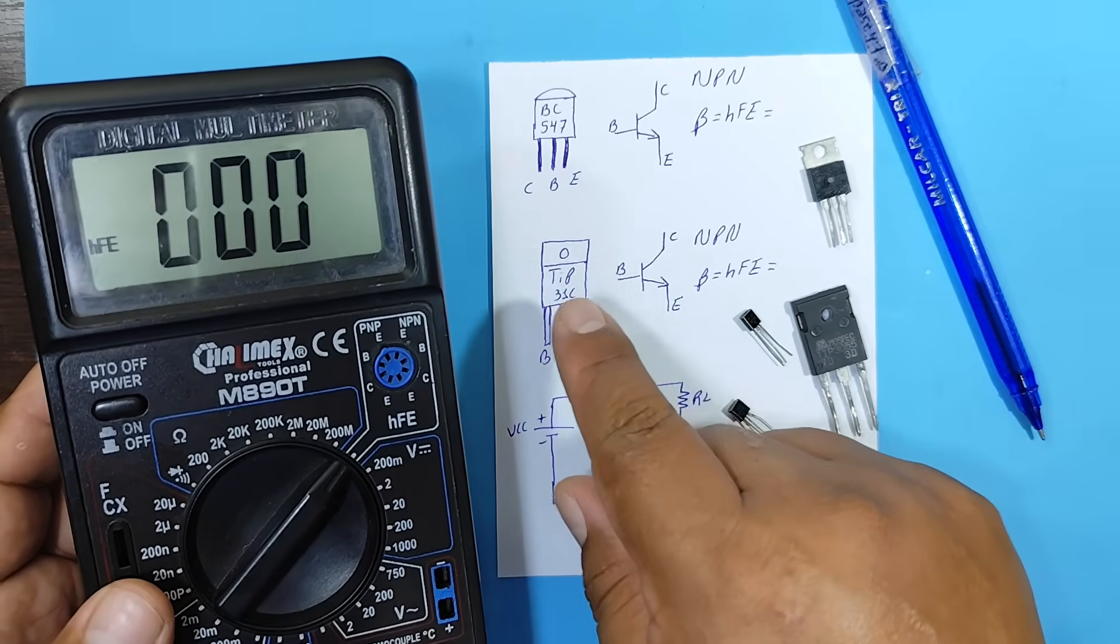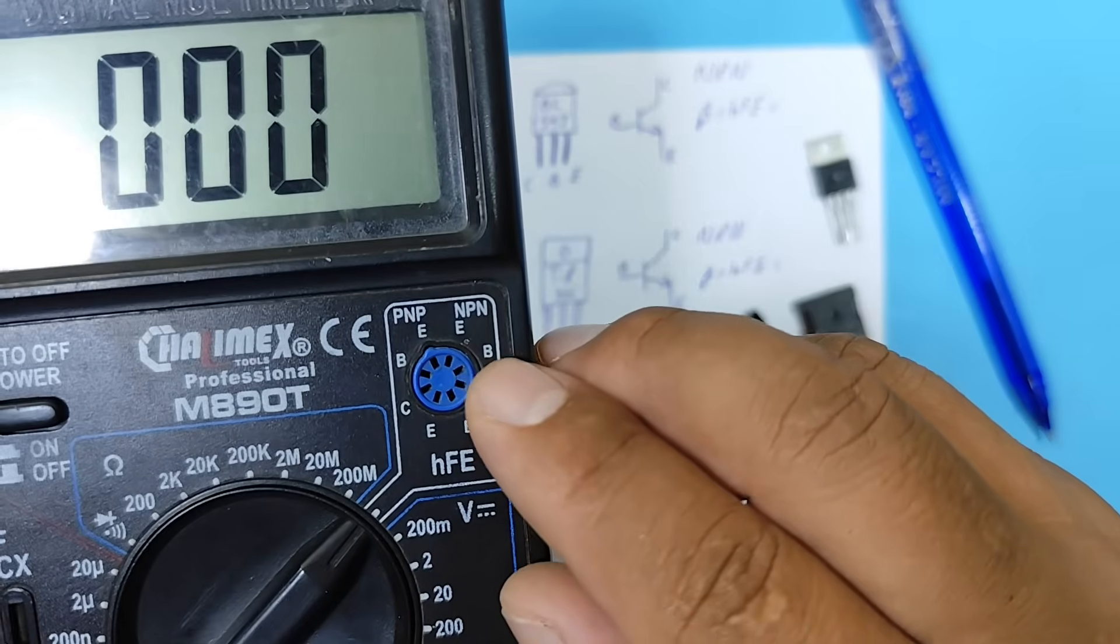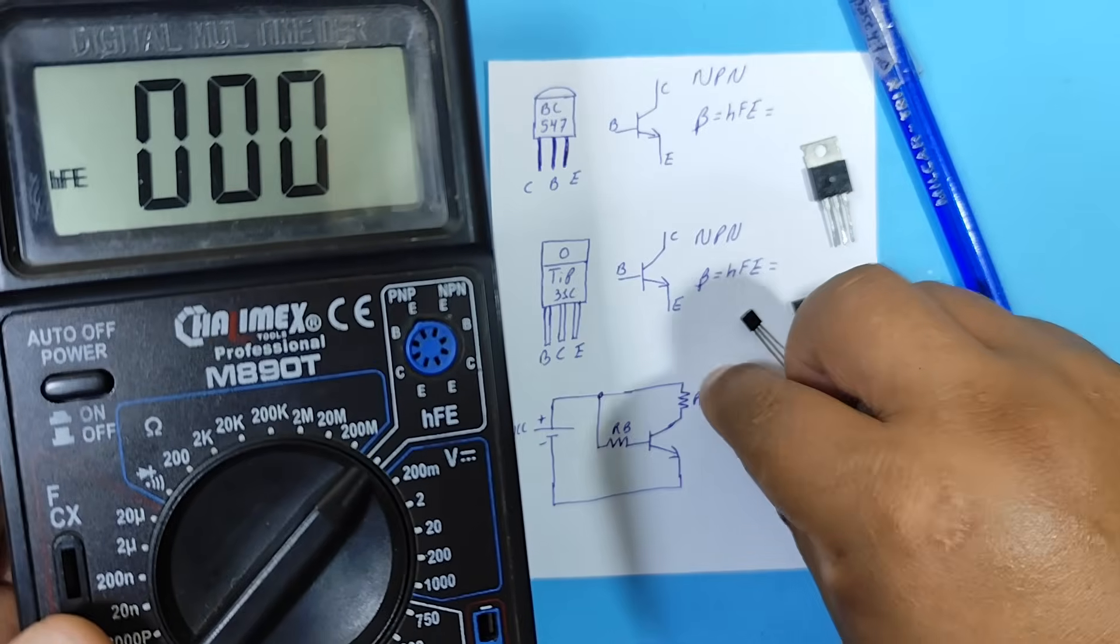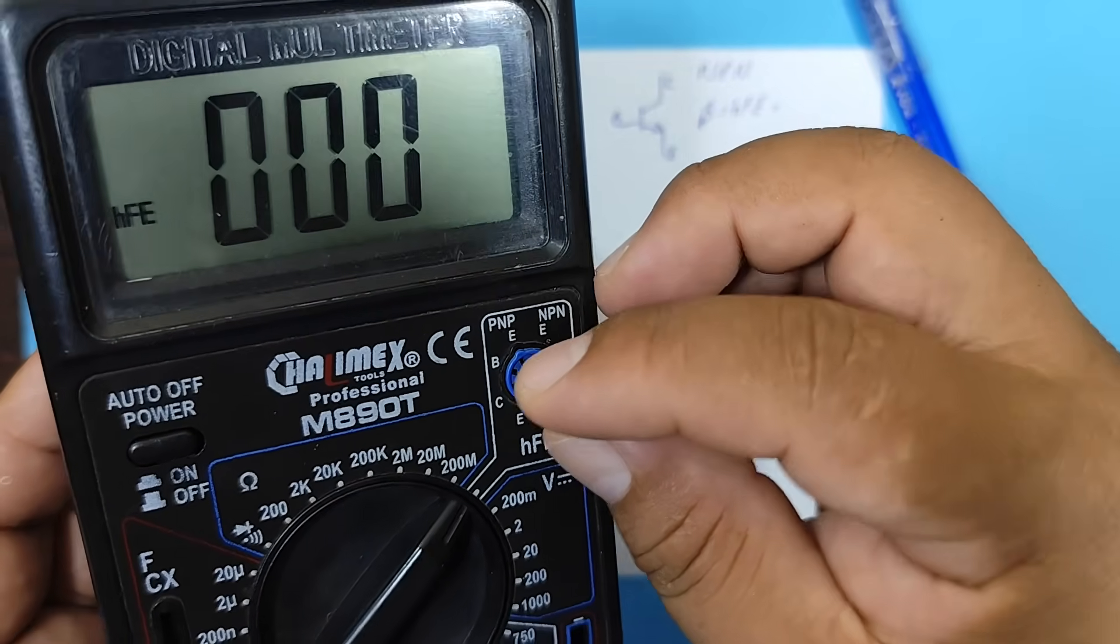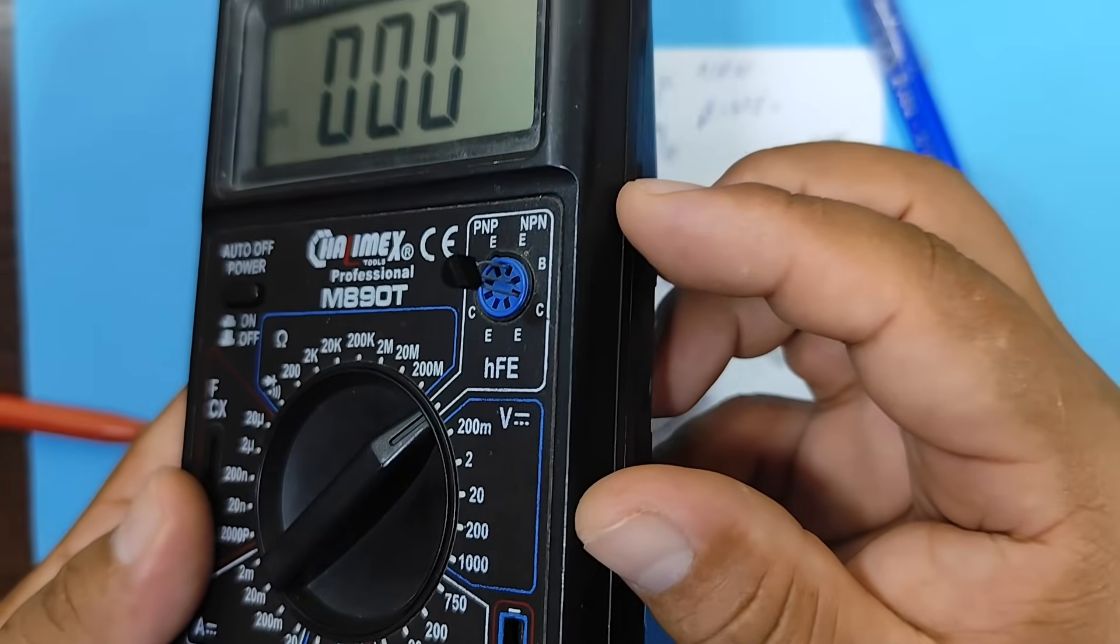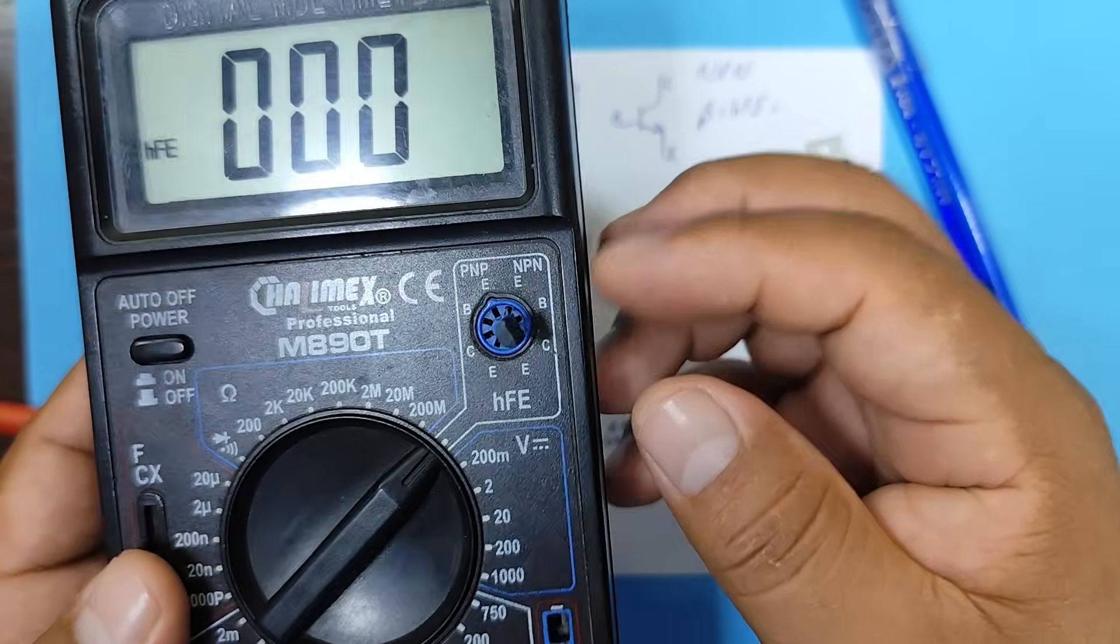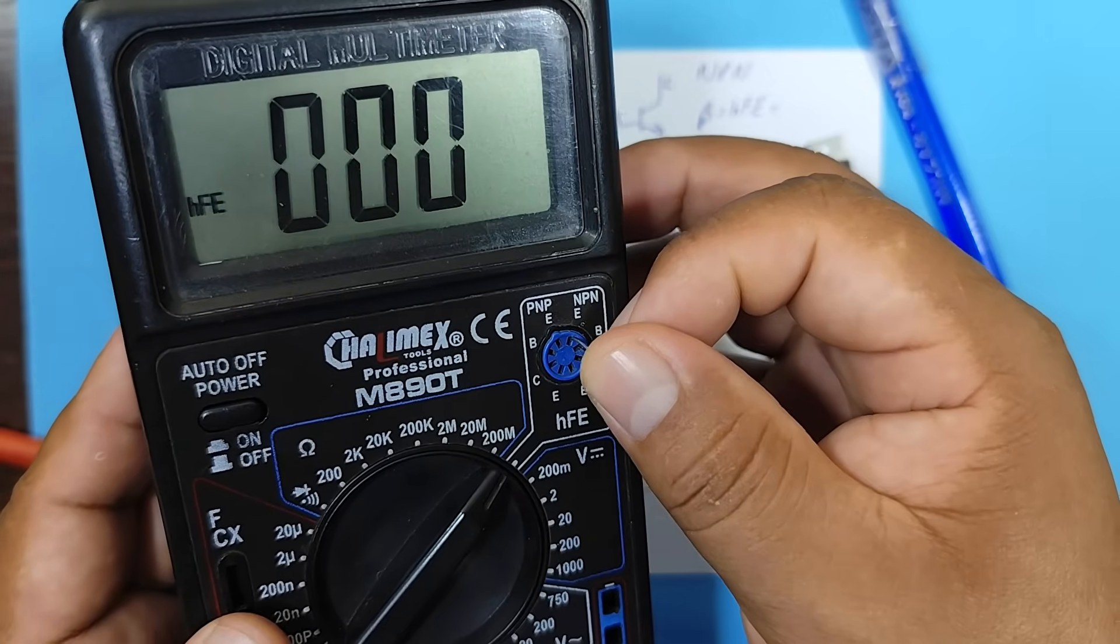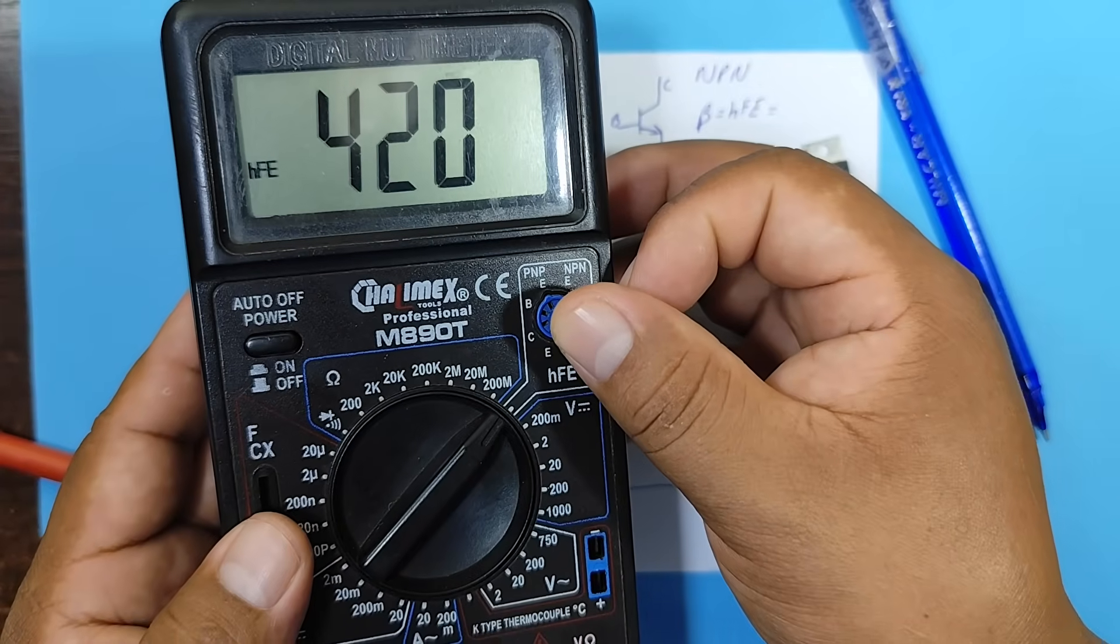Now that we've identified the pins and know they're NPN, we can place them in the holes, where the pins must align. For example, this one would go like this, collector, base, and emitter. We press it in a little. And there we have the gain, which would be 420.